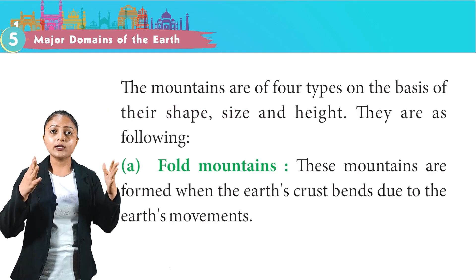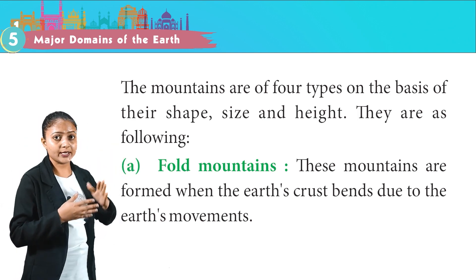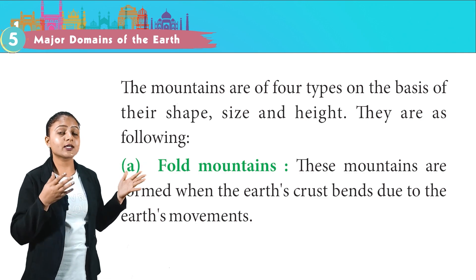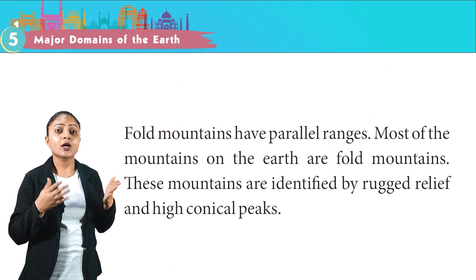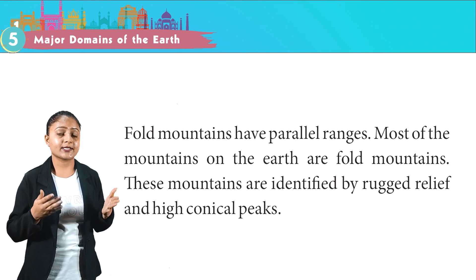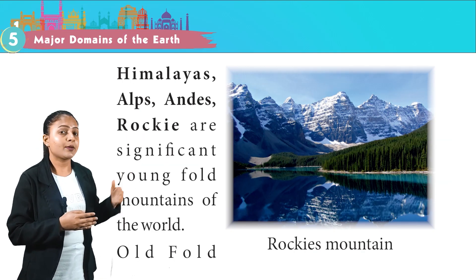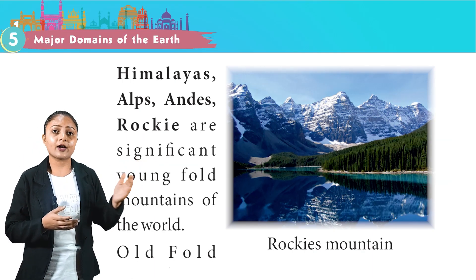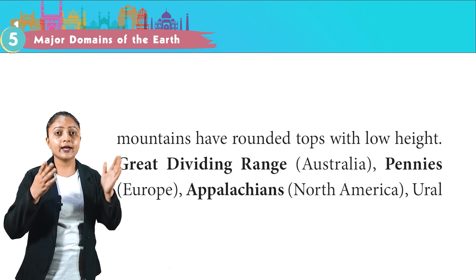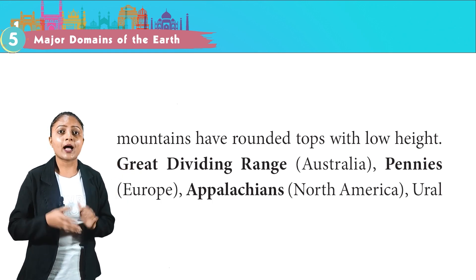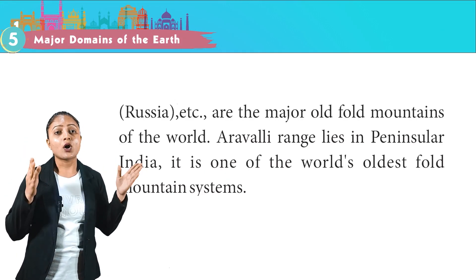Mountains are of four types on the basis of their shape, size and height. Fold Mountains are formed when the earth's crust bends due to earth's movements. Fold mountains have parallel ranges, and most mountains on the earth are fold mountains. They are identified by rugged relief and high conical peaks. The Himalayas, Alps, Andes and Rockies are significant young fold mountains. Old fold mountains have rounded tops with low height — the Great Dividing Range in Australia, the Pyrenees in Europe, the Appalachians in North America and the Urals in Russia are major old fold mountains.